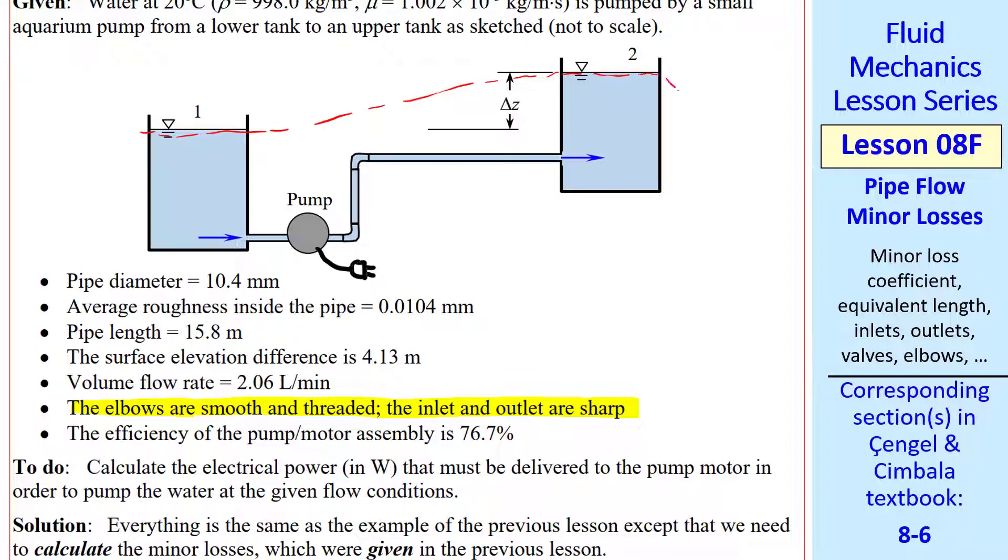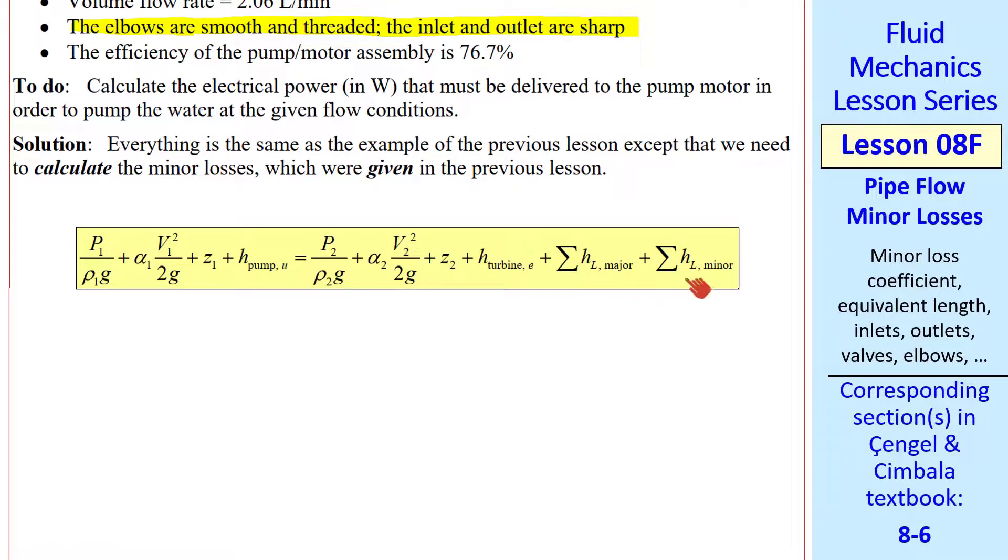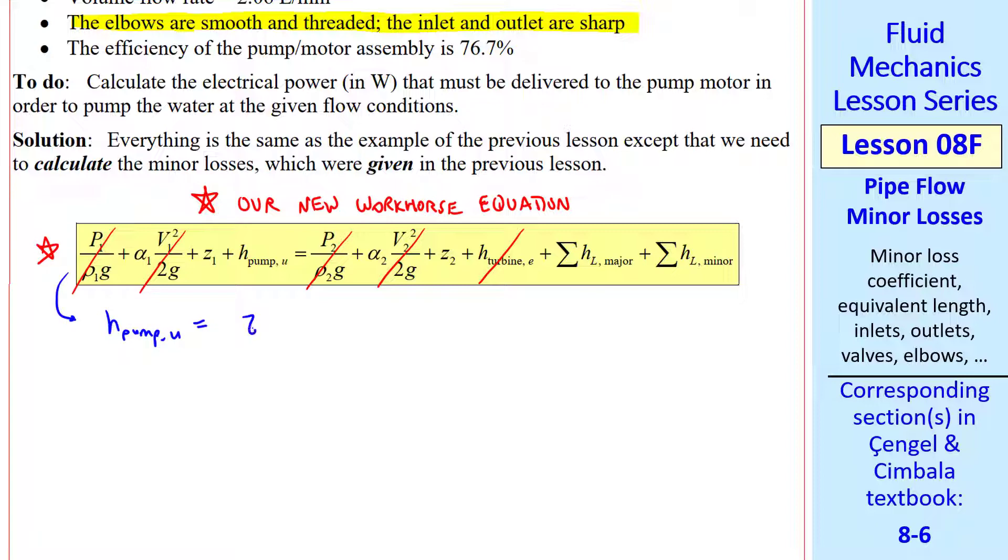I choose the same control volume as I did with the previous example, cutting through these two surfaces and through the electrical cord, where electrical power is coming into our control volume. Here's our energy equation with the new notation. This is our new workhorse equation, since we'll use this one for many problems that we solve. Because of our wise control volume, these terms cancel as they did previously, and there's no turbine. So H pump U is just the elevation difference, plus the sum of all the major losses, plus the sum of all the minor losses.